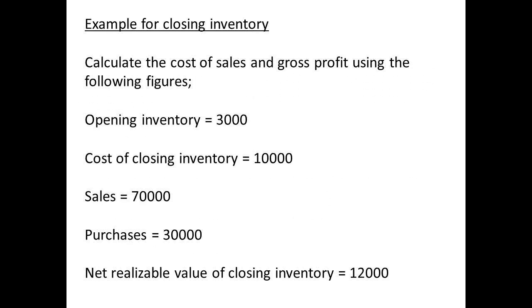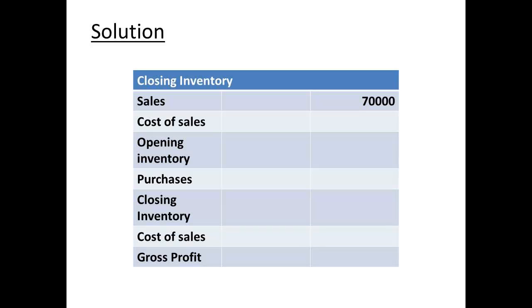Let us have a simple example for closing inventory. We have opening inventory of £3,000, closing inventory of £10,000, sales of £70,000 and purchases of £30,000. We also know the net realisable value of the closing inventory is £12,000. We need to calculate cost of sales and gross profit. Sales are £70,000. To determine cost of sales we start with opening inventory of £3,000, add purchases of £30,000, and subtract the closing inventory of £8,000, leaving a cost of sales of £25,000. Subtracting cost of sales from sales — £25,000 from £70,000 — we are left with a gross profit of £45,000.